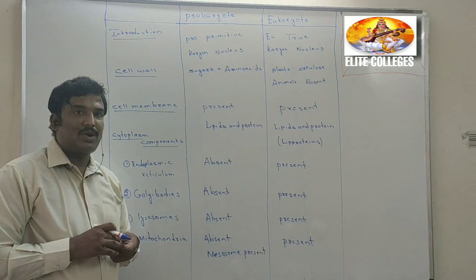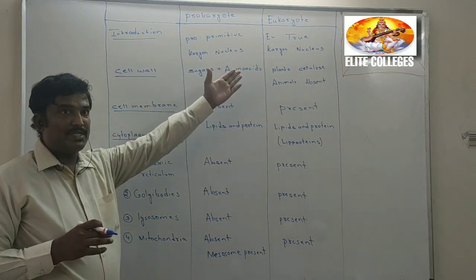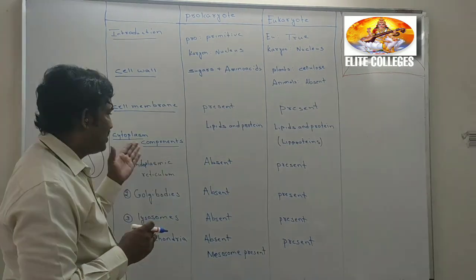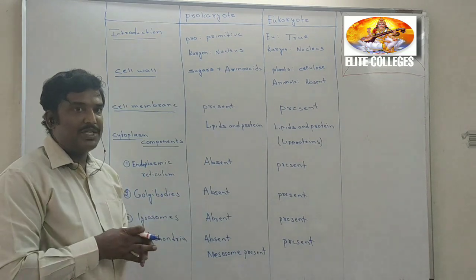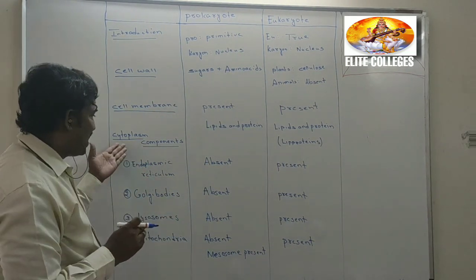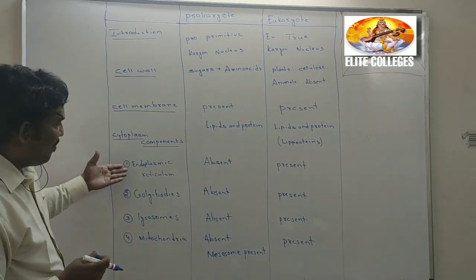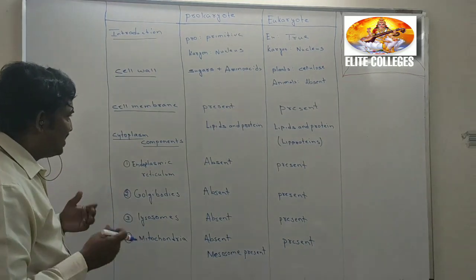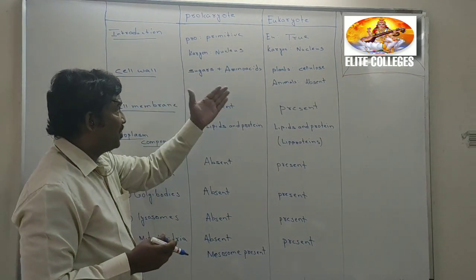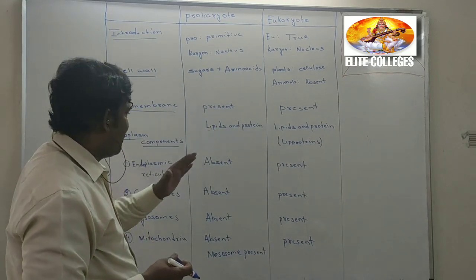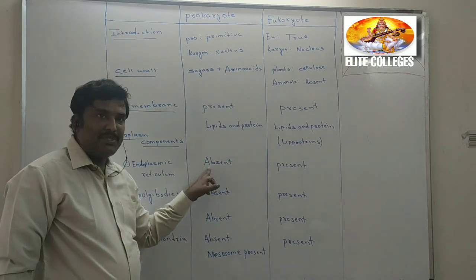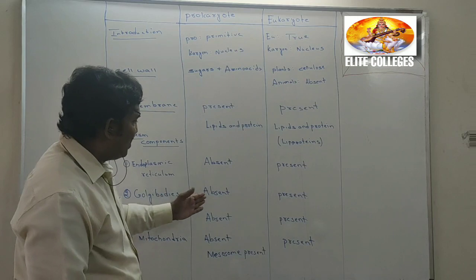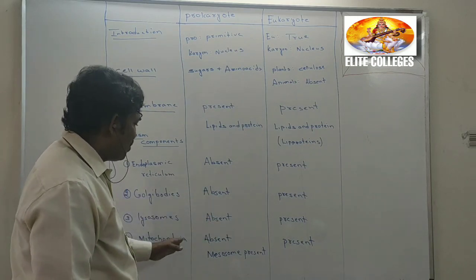Let us compare the cytoplasmic components present in prokaryotes with those in eukaryotes. Apart from the nucleus, the other fluid and components inside the cell are called cytoplasm. There are different cytoplasmic components like endoplasmic reticulum, Golgi bodies, lysosomes, and mitochondria. Endoplasmic reticulum is absent in prokaryotes, and similarly Golgi bodies, lysosomes, and mitochondria are also absent — that is the reason it is called a primitive cell.